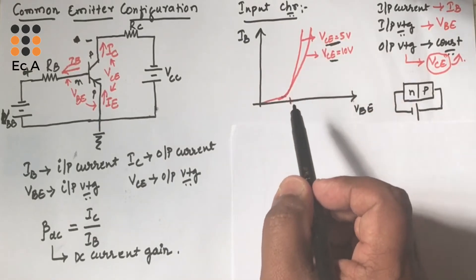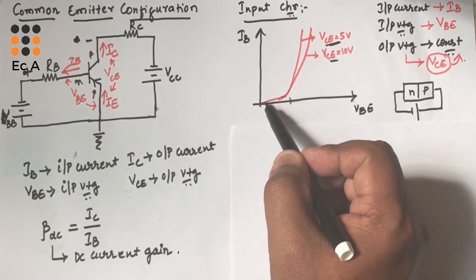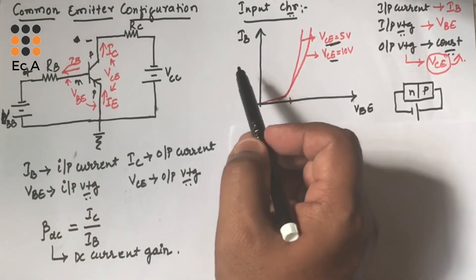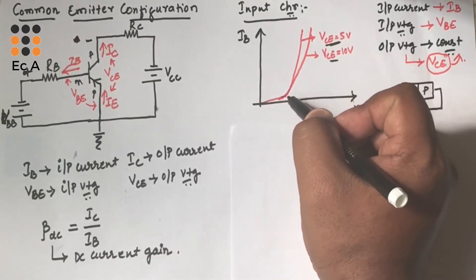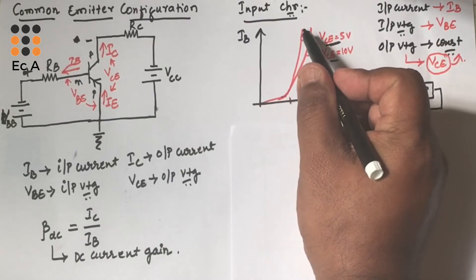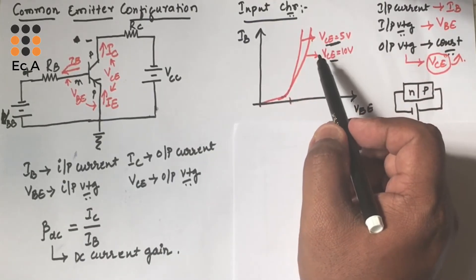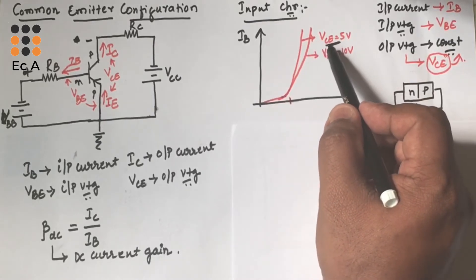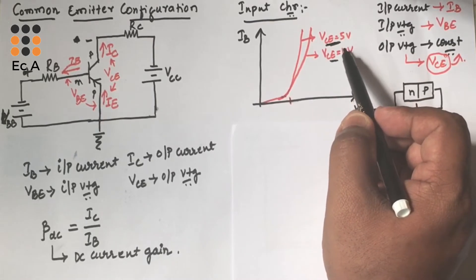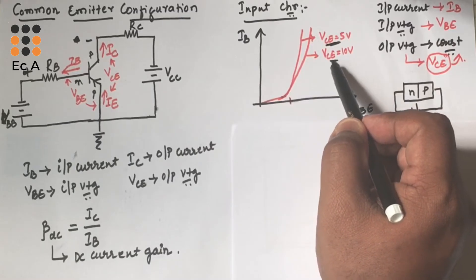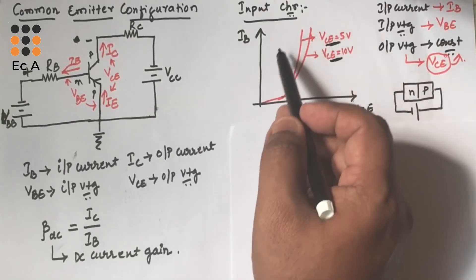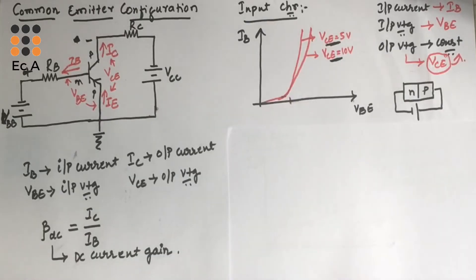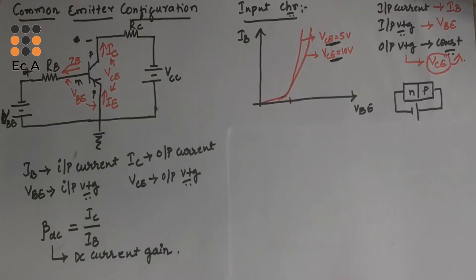This is similar to the forward bias condition of a diode, so in the input characteristics we get a graph similar to the forward characteristics of a diode. Initially as we increase VBE, the input current will be very small until the applied voltage reaches the knee voltage. Once it reaches the knee voltage, the current increases linearly. As we increase VCE from 5 volts to 10 volts constant, the graph starts shifting towards the right-hand side. This shifting is due to the Early effect, which we will understand in a future lecture.